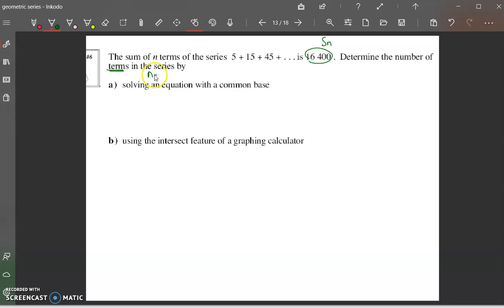So they're looking for n. Let's gather information. We know a is 5, r here will be 3, Sn for the unknown number of terms is this.